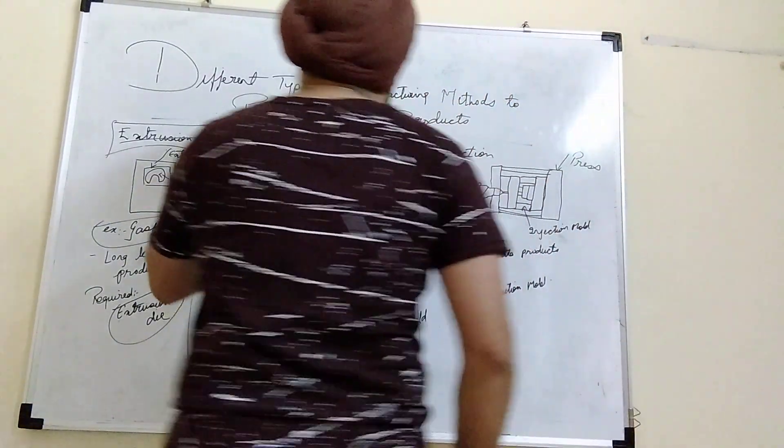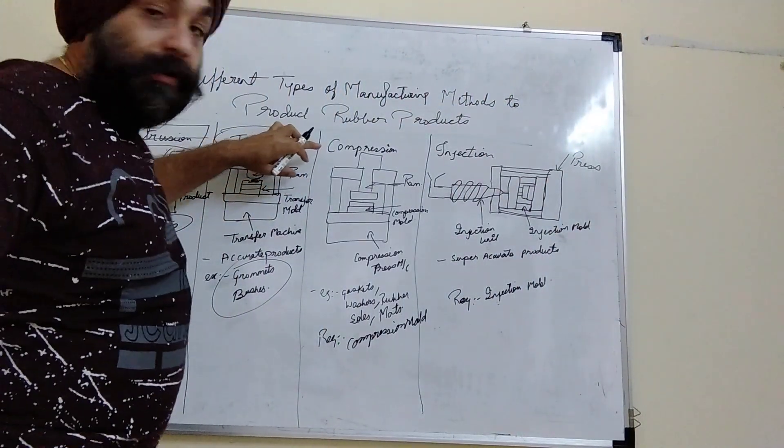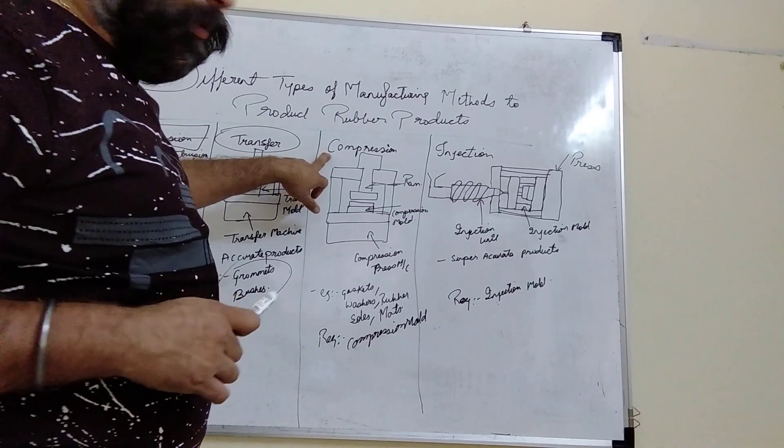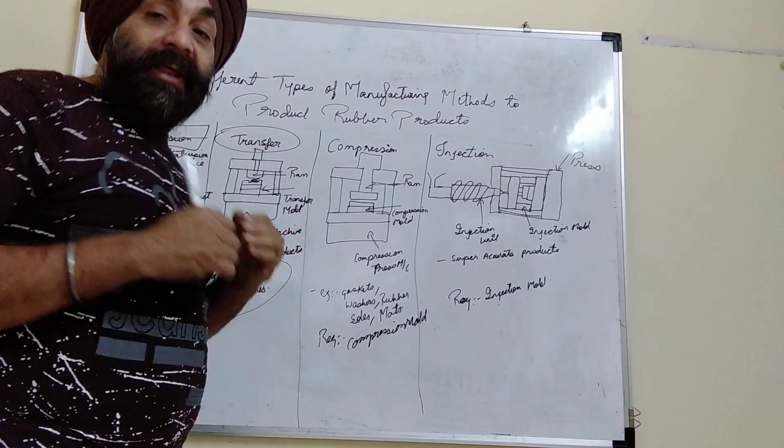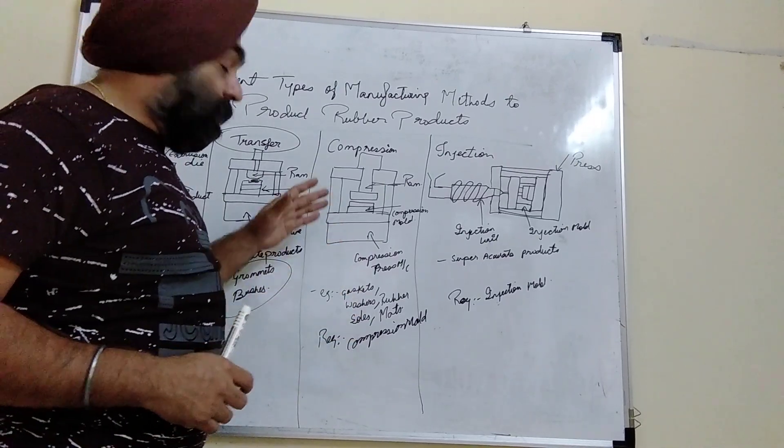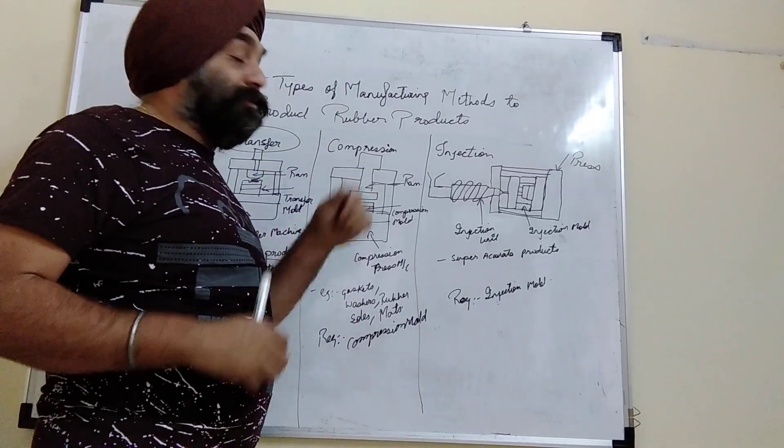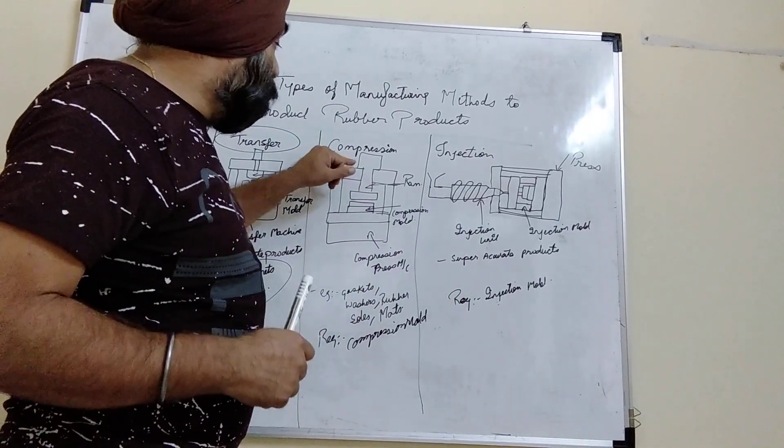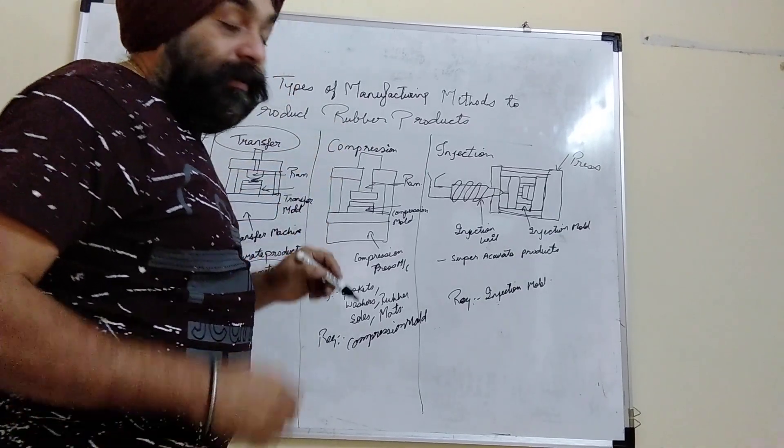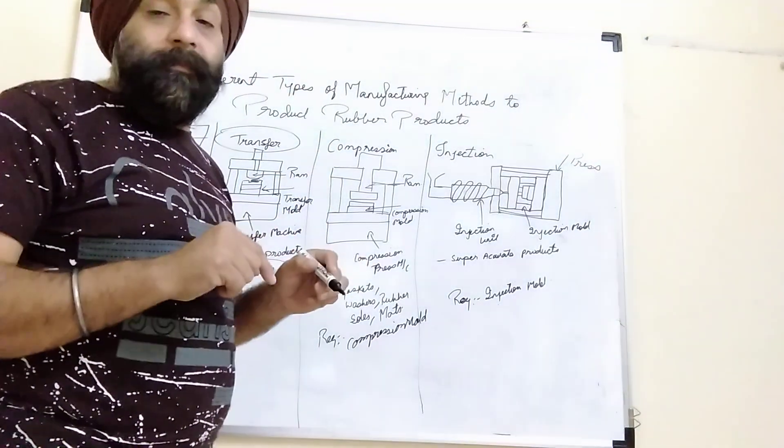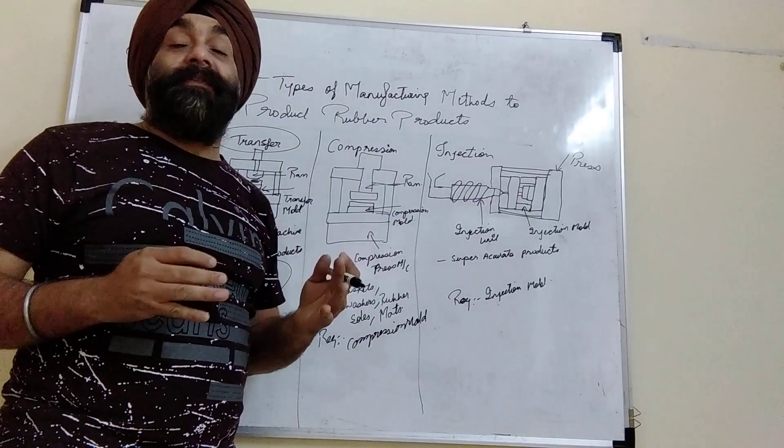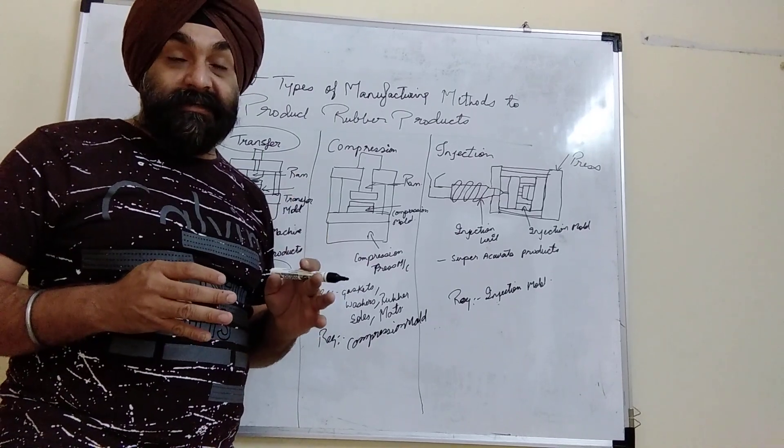Third, we have compression mold. Compression mold is a very old method used for rubber products. It is very easy to produce and the machine is not very complex. Many people in India are still using manual rubber machines, but we also have hydraulic rubber machines where this is a press with heaters attached. The rubber mold is heated up to 170 to 180 degrees Celsius.